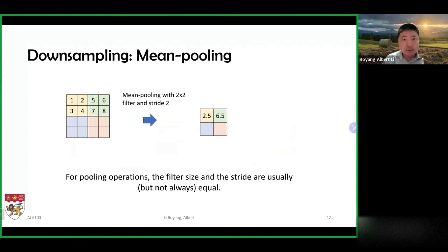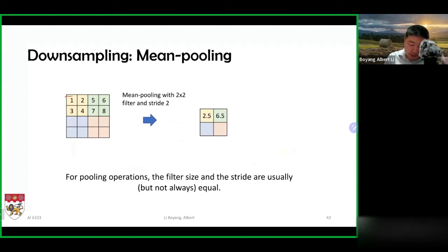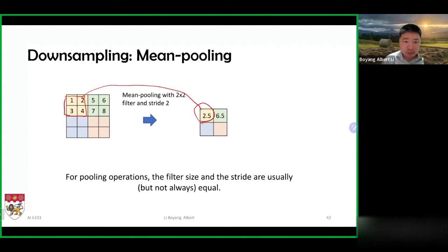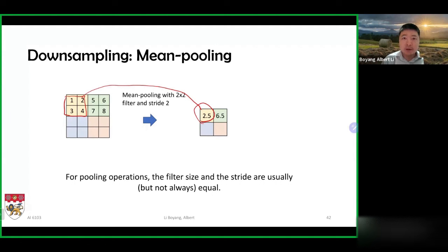An alternative to max pooling is mean pooling. It's basically the same idea — I'm going to divide the input matrix into a number of areas and take the average within each area. I can take the average of these four values and transfer that as my output for the mean pooling operation. Again, this is a two by two filter and stride two. I could do three by three filter with stride three or even stride two, though typically the filter size and stride are equal.